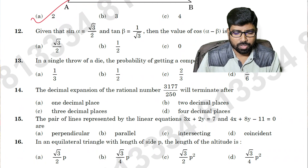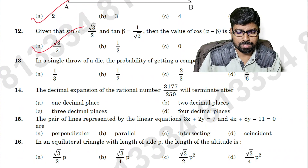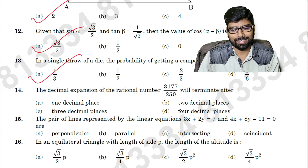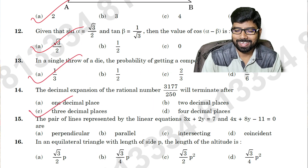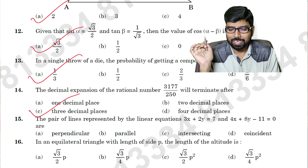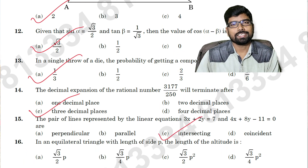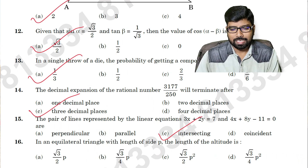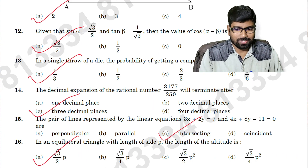Question number twelve: option A. Question number thirteen: option A. Question number fourteen: option C. Question number fifteen: option C is the right answer. Question number sixteen: option A is the right answer.